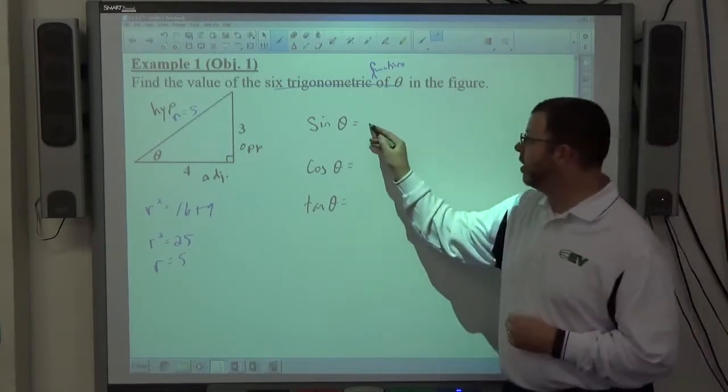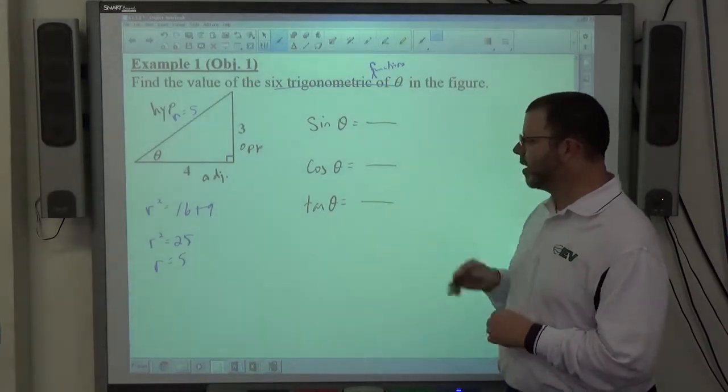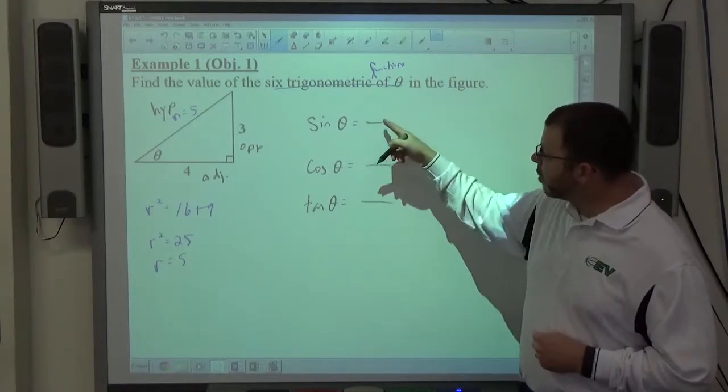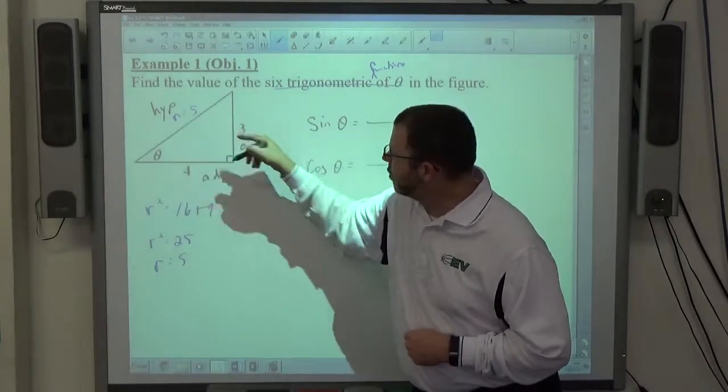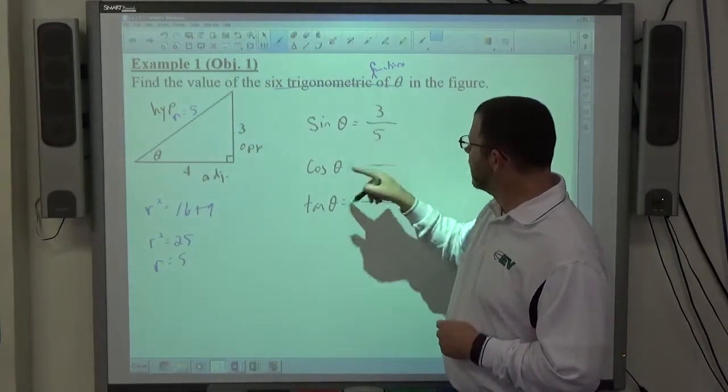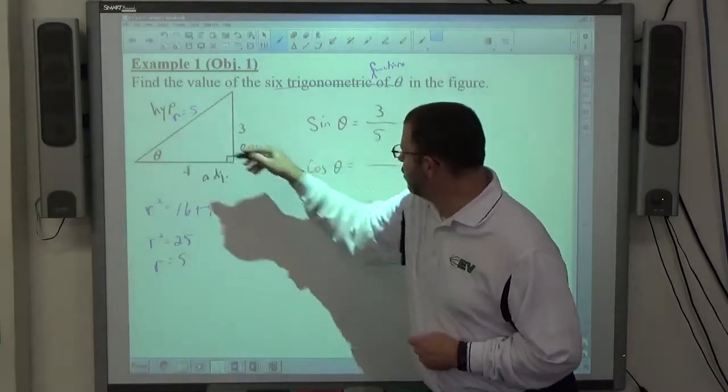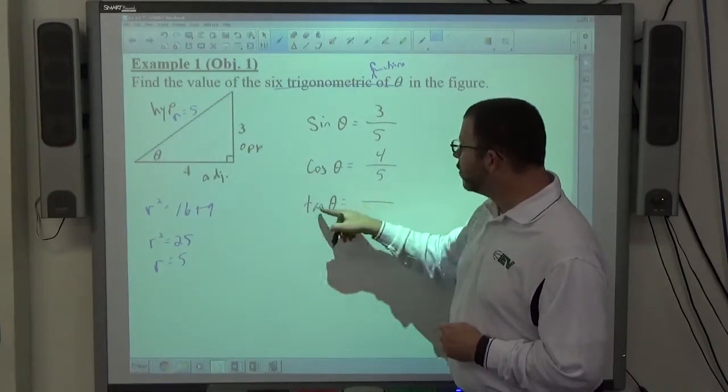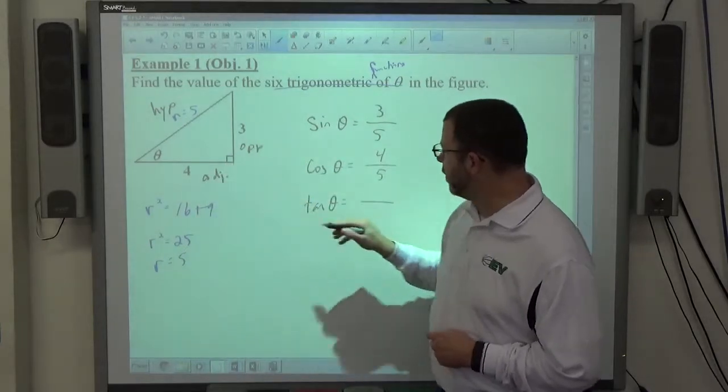And just do what you already know how to do with those. If we do SOH-CAH-TOA, we're making fractions, right? SOH, OH, 3 over 5. CAH, A over H, 4 over 5. TOA, O over A, 3 over 4.